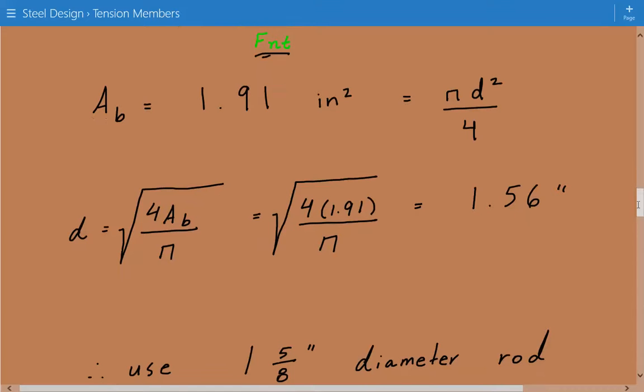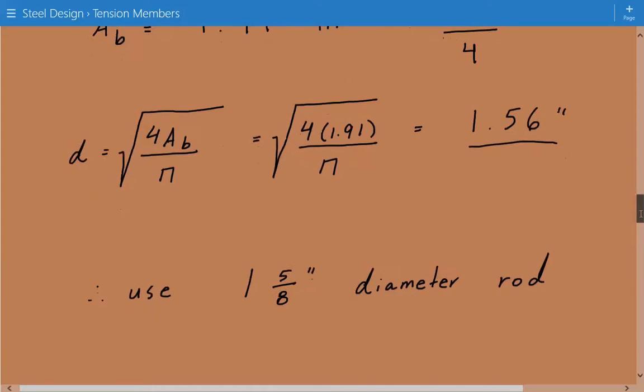So the minimum required diameter is equal to 1.56 inches. So for design purposes, we can say we'll use a 1 and 5 eighths inch diameter rod.